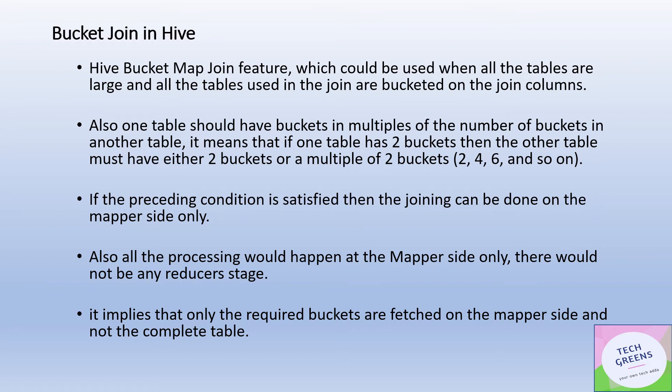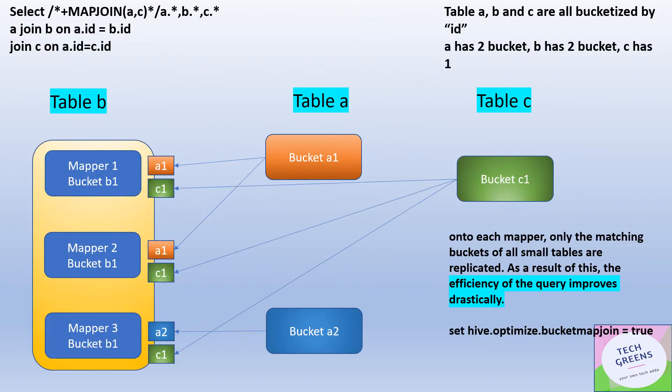As it happens in the Map Side Join as well, all the processing will happen in the mapper itself, and only the required bucket would be fetched into the specific mapper during the mapping stage, which saves us on the cost of fetching the complete or entire table.